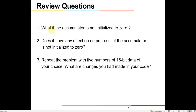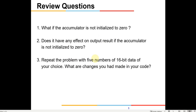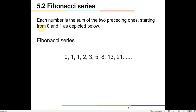Here are some review questions — they are simple. What if the accumulator is not initialized to zero? Obviously if there is some junk value there it is going to get added. Does it have any effect on the output result? Also, repeat the problem with five numbers of 16-bit data of your choice. Since this is for 8-bit data, what are the necessary changes for 16-bit? You need to fetch a word instead of a byte, and you probably need to increase SI by two each time, because once a word gets transferred SI needs to be incremented by two.